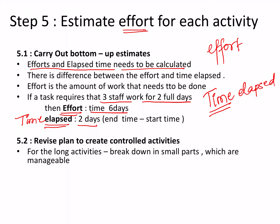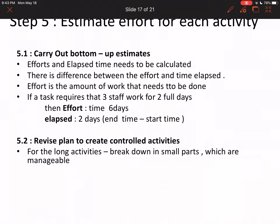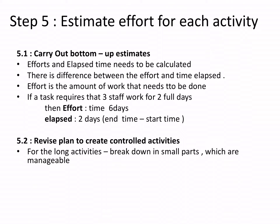Step 5.2: carry out bottom-up estimates and revise the plan to create controlled activities. If there is a huge project, it is very difficult to monitor and manage. It is better to break any big project down into modules or smaller manageable parts. You have to revise the plan to convert the big project into smaller parts so that you can manage the project properly.